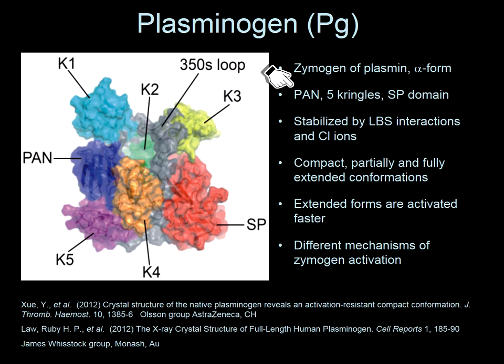There are five kringle domains and a serine-proteinase catalytic domain. This compact conformation is stabilized by lysine binding site interactions of kringles 2, 4, and 5, and chloride ions, which are actually very important. Plasminogen can also exist in other conformations, including a partially or fully extended conformation called beta or gamma. The binding of small molecules such as benzamidine and epsilon-aminocaproic acid — easier to say than 6-amino-hexanoic acid — favors extended forms.